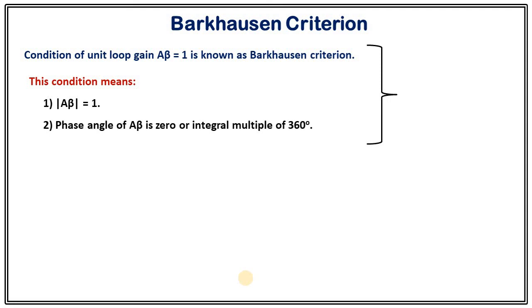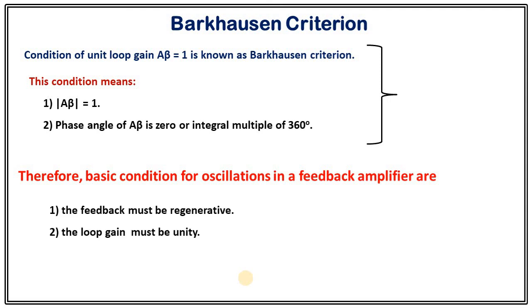So if someone will ask you what is Barkhausen criterion you just need to write that the condition of unit loop gain A beta equals to 1 is known as Barkhausen criterion. Even though if you want you can explain these two points. So to summarize the basic condition for oscillation in a feedback amplifier we need two things that feedback must be regenerative and second one is loop gain must be unity.